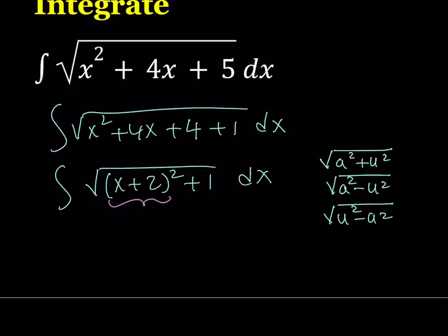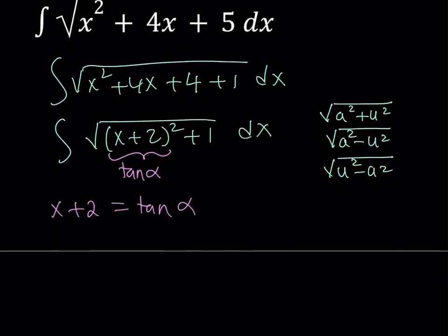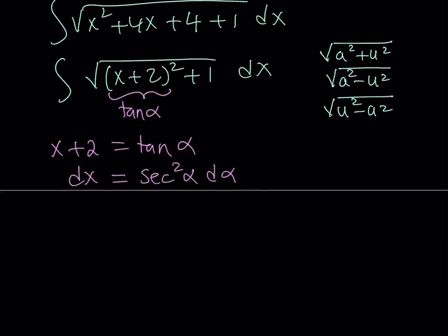I'm going to let x plus 2 equal tangent alpha. From here, tangent squared alpha plus 1 is equivalent to secant squared. So: x plus 2 equals tangent alpha. Differentiating both sides, dx equals the derivative of tangent alpha, which is secant squared alpha, times d alpha.